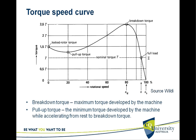When you start from zero speed, you start with the locked rotor torque. There is a certain range up to about 20% of the speed where the torque passes through a local minimum point.